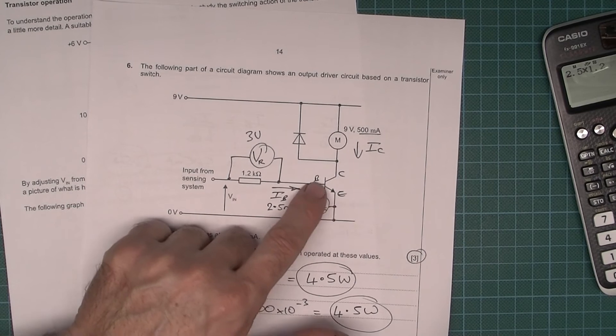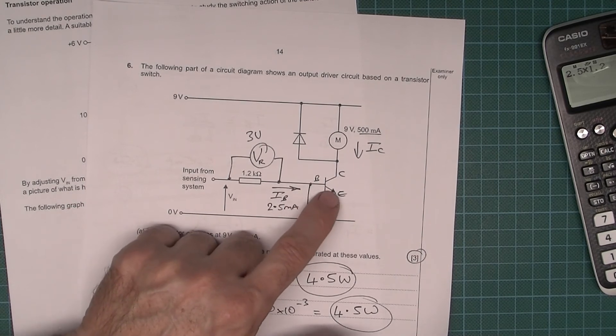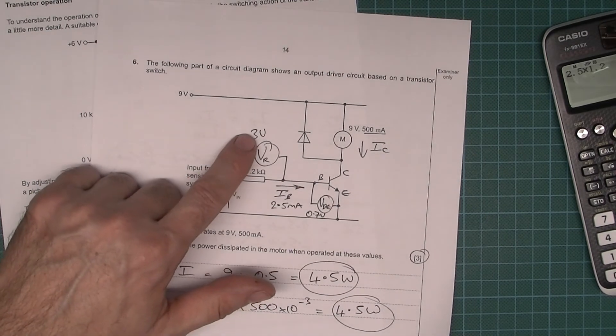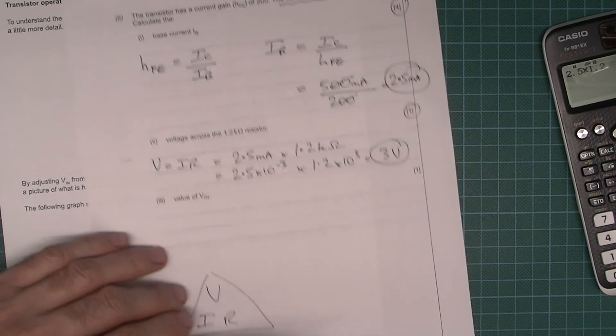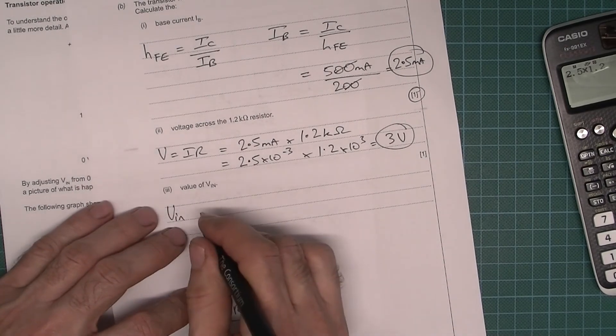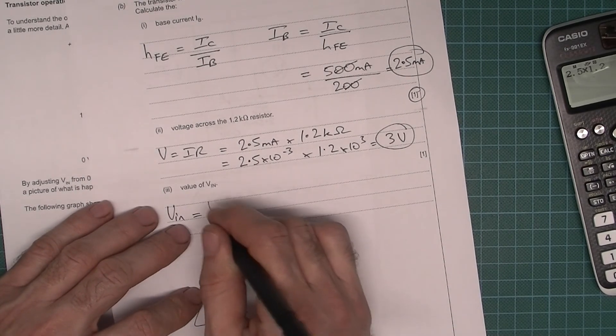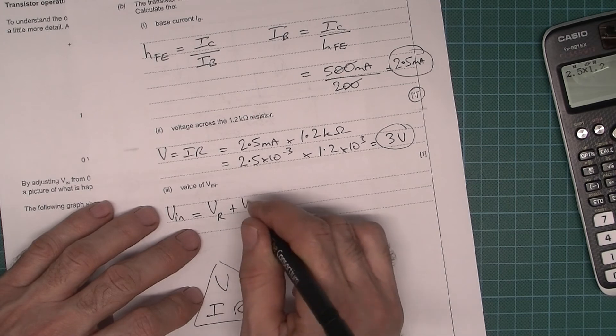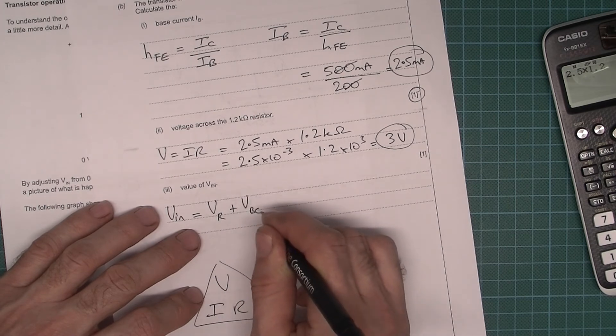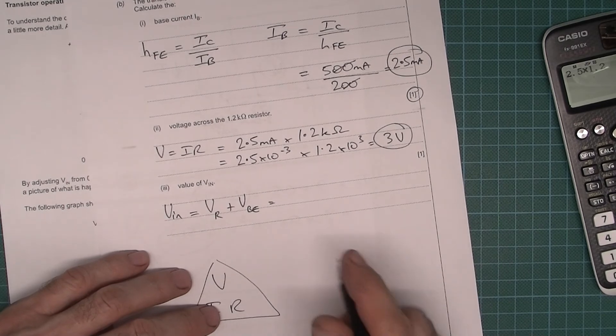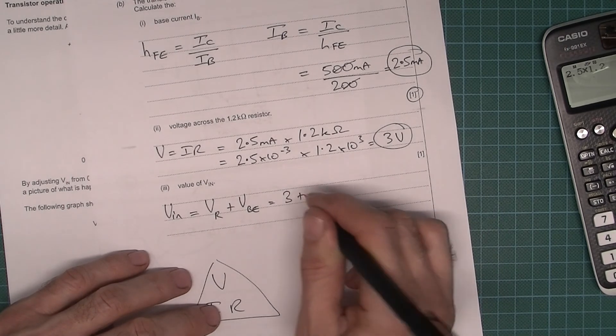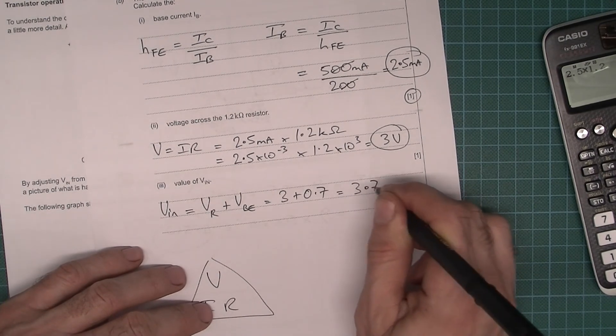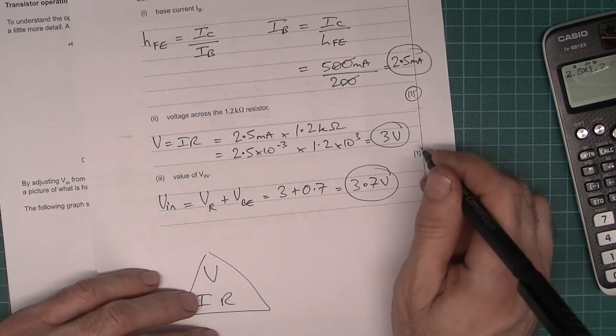So typical. If you remember, the typical voltage drop across a silicon diode is 0.7 volts. So that's where we get the 0.7 volts from. So we're now going to be dropping 3 plus 0.7 volts. So V in is going to be equal to the voltage dropped across that resistor plus the voltage dropped across the base emitter junction. And so that's going to be 3 plus 0.7. So 3 volts plus 0.7 volts equals 3.7 volts. Circle your answer.